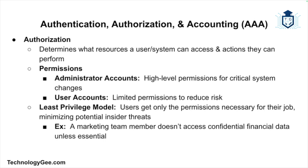Authorization determines what resources a user or system can access and what actions they are allowed to perform. Administrator accounts tend to have high-level permissions to change settings, install software, or access all files, while user accounts have limited permissions to reduce the risk of accidental or malicious system changes. The least privilege model means users should have the minimum permissions necessary to perform their job. For instance, a marketing team member should not have access to confidential financial reports if it's not part of their job function.